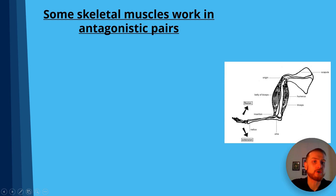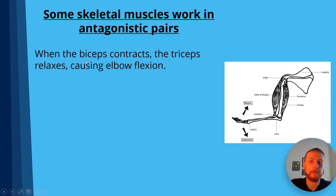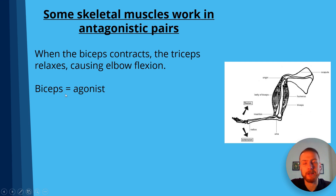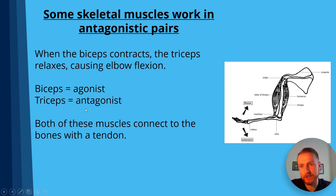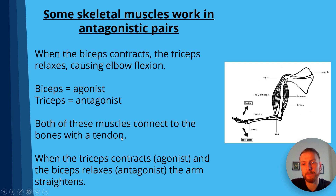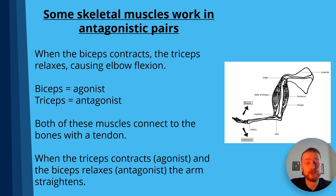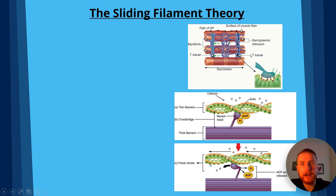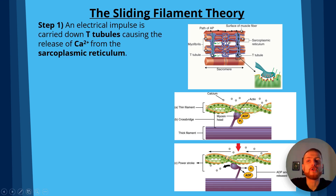Some skeletal muscles work in antagonistic pairs. A classic example is the biceps and triceps: the bicep moves the arm up whilst the tricep straightens it. When the bicep contracts, the tricep relaxes, causing elbow flexion — in this case the bicep is the agonist and the tricep the antagonist. Both are connected to bone by tendons. When the tricep contracts it becomes the agonist and the bicep relaxes as the antagonist, straightening the arm. Another example is the quadriceps and hamstrings.